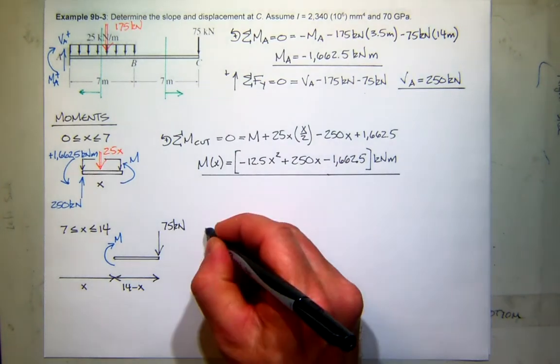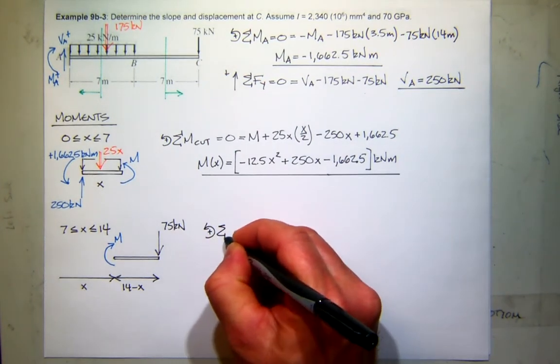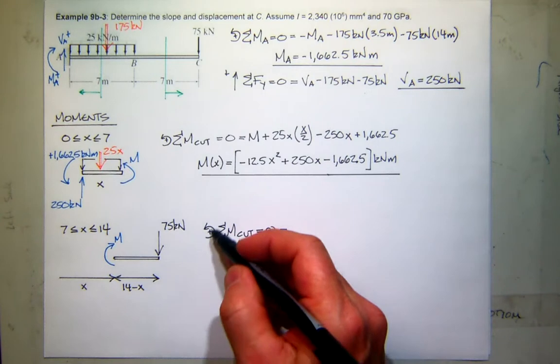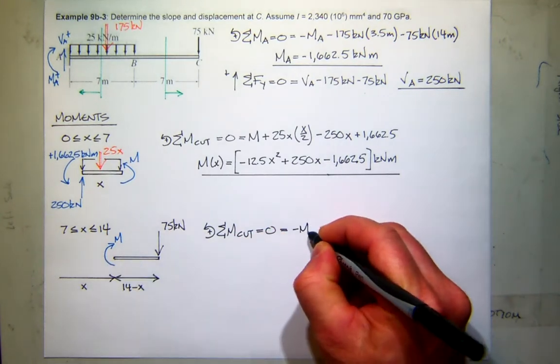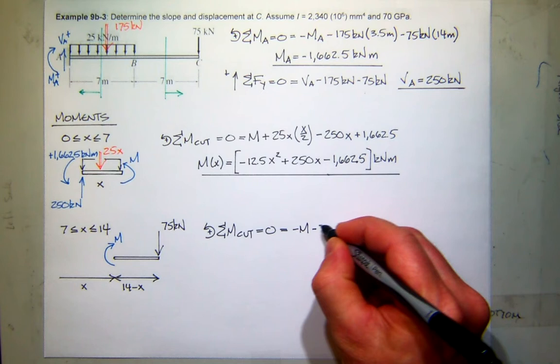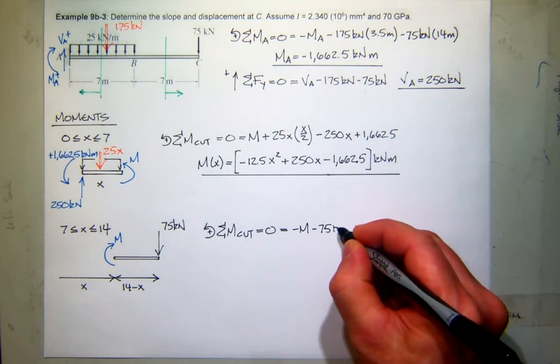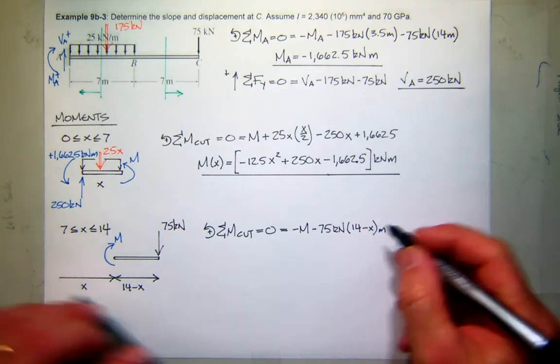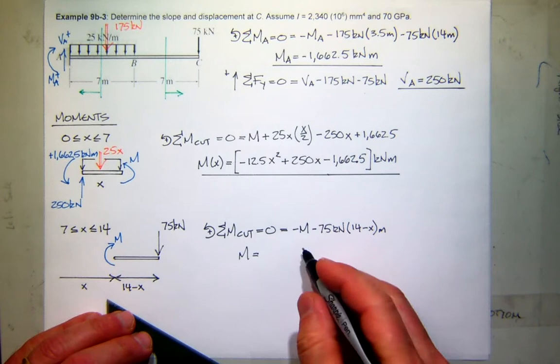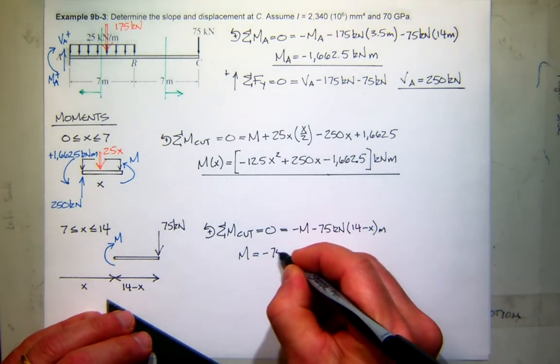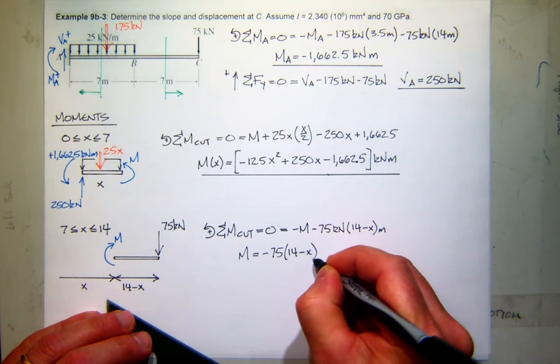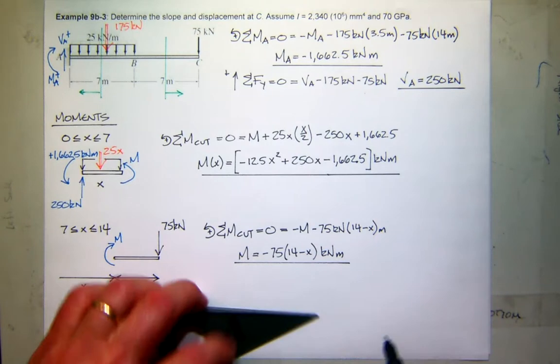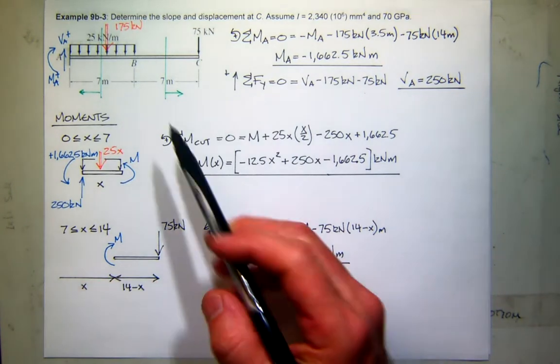So measured from the left to that cut at some distance x leaves the segment of my free body, which would be the length minus x, which is 14 minus x. And then I have my positive moment. Well, that's an easy one to check. So when I sum the moments at this cut, again, make sure it's in equilibrium. I'm using right-hand rules, so this would be a negative moment. And this would also be a negative moment. So the force is 75 kilonewtons and the distance is 14 minus x meters. So then my moment will be that.